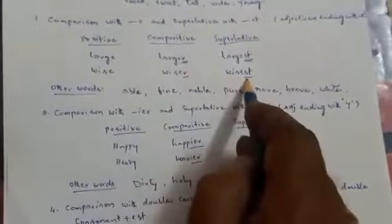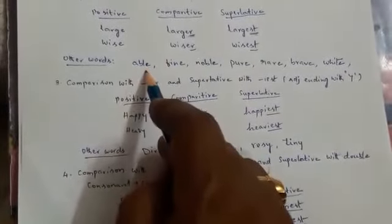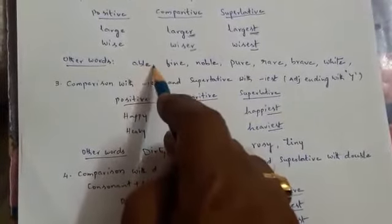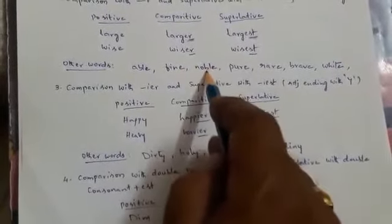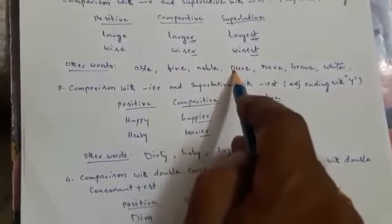So, wise, wiser, wisest. And go with the other ones. Able, abler, ablest. Fine, finer, finest. Noble, nobler, noblest, like that.